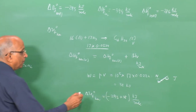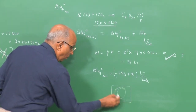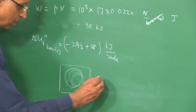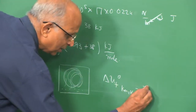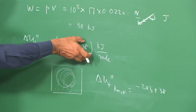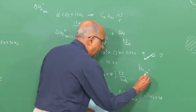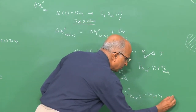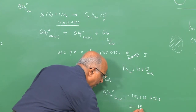For kerosene vapor, we add the latent heat of vaporization: H_v (kerosene) = 56.8 kJ/mol. So the internal energy of formation of kerosene vapor = −293 + 38 + 56.8 = −198.2 kJ/mol. Compared to the enthalpy of formation of −293 kJ/mol for kerosene liquid, the internal energy of formation of kerosene vapor is −198.2 kJ/mol.